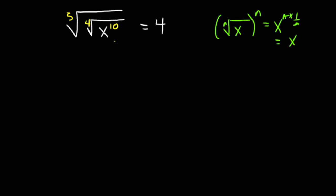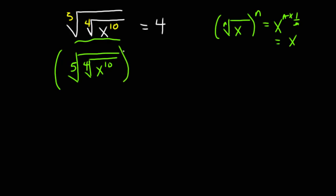I'm going to apply the same method here. In this problem the outer root is the fifth root. So what I'm going to do is exponent this whole thing to five, and because this is an equation, what I do to the left hand side should be done to the right hand side. So this five cancels that, and so the fifth root disappears and we'll be left with the fourth root of x exponent 10, and this is equal to 4 exponent 5.